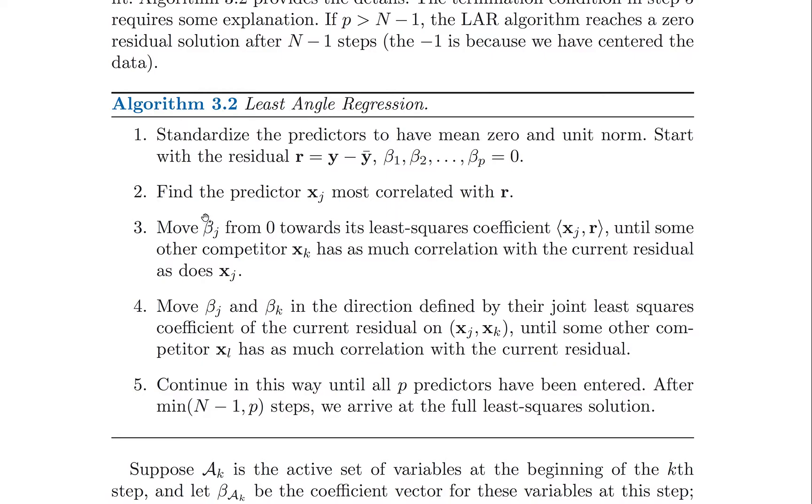Now what we'll do is we'll adjust the coefficient beta j or mj from zero towards the idealized coefficient in the least squares model using only that variable. Now if this were a forward stepwise progression, what you would do is simply take that least squares model using that one variable and be done with it. So you're producing the best possible one variable model. That's not what happens in LARS.